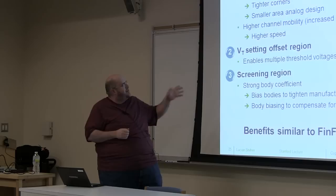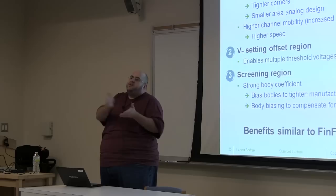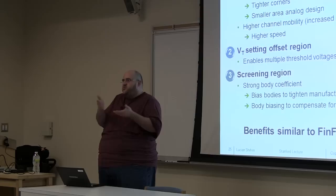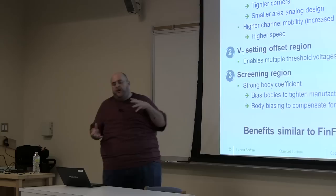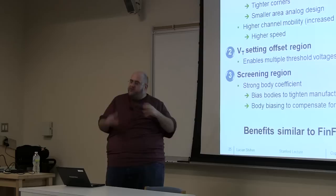The third layer is our screening region. What this does is it terminates the depletion depth, and because it's such a hard dose, it keeps the depletion depth constant across the channel. If I'm keeping the depletion depth constant, my VT is going to be constant, which means much less VT variation. We needed a way to terminate the depletion but also change the VTs — this is the structure we came up with.